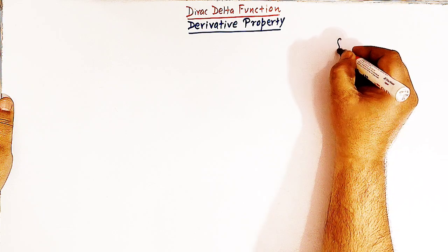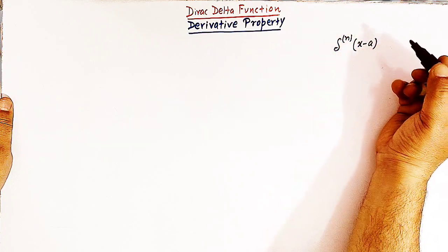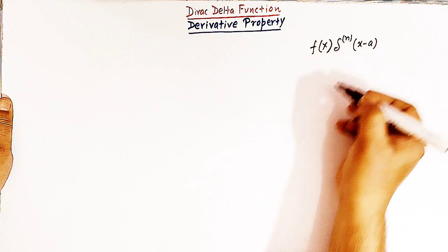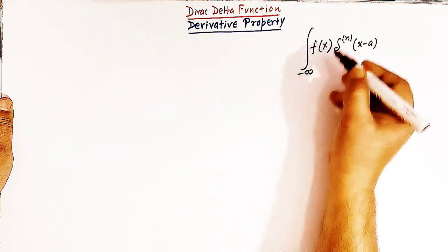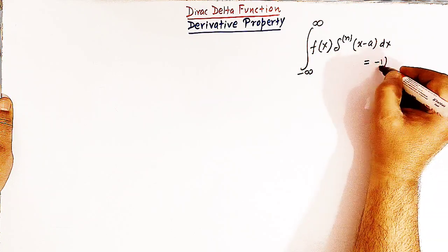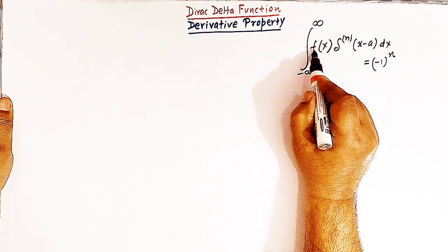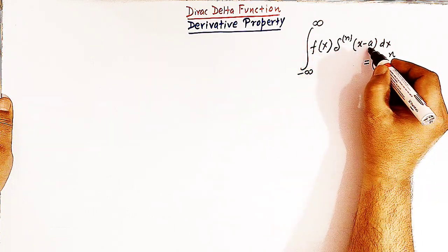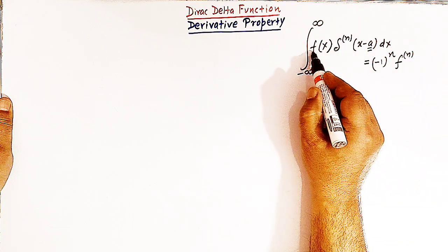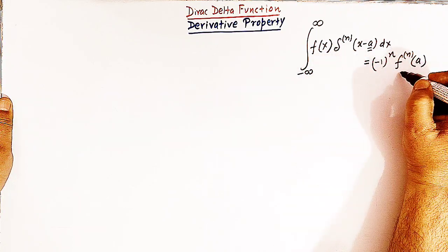So now consider the nth derivative of the Dirac delta function, that is delta^(n)(x minus a). Here n denotes the order of the derivative and let us consider a test function f of x. So if we integrate from minus infinity to infinity, the value of this integral may be given as minus 1 raised to n, and then we find out the nth derivative of f of x evaluated at the point a.